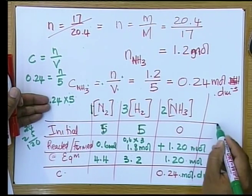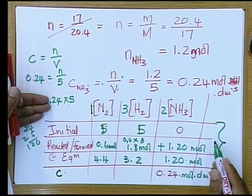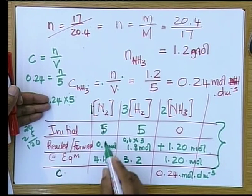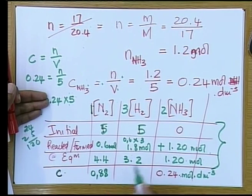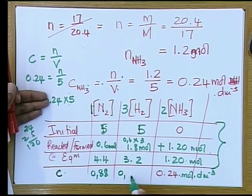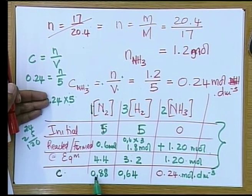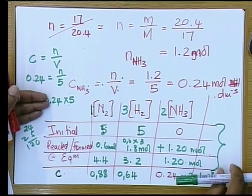Everything above the concentration row is in moles, and the last line is where we divide by 5 to get our concentration. To get the concentration of nitrogen at equilibrium, we divide 4.4 by 5, giving 0.88. Then we divide 3.2 by 5, giving 0.64.